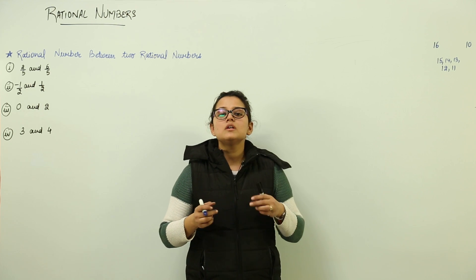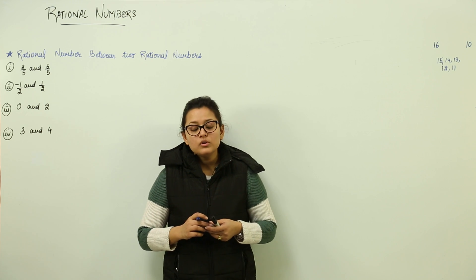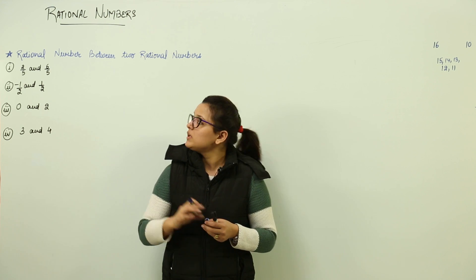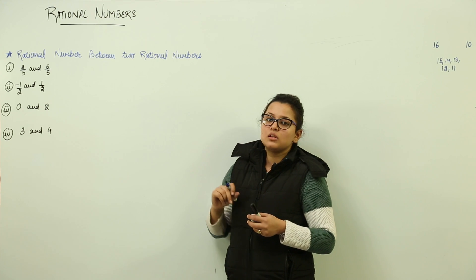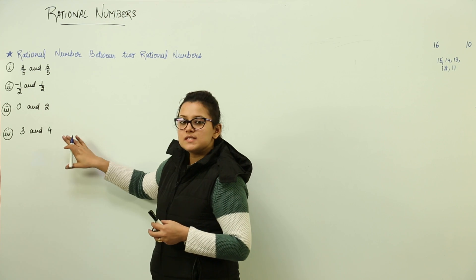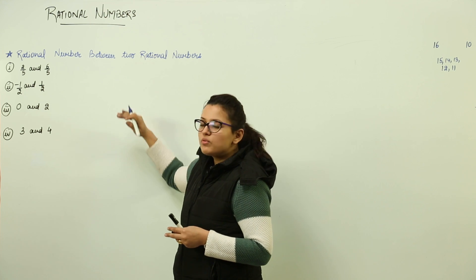Now 16 and 10 were the natural numbers or you can say whole numbers. What would you do if you have to find the rational numbers between two rational numbers? Now I have taken various cases in the form of questions. Please concentrate on the type of question that I am doing.